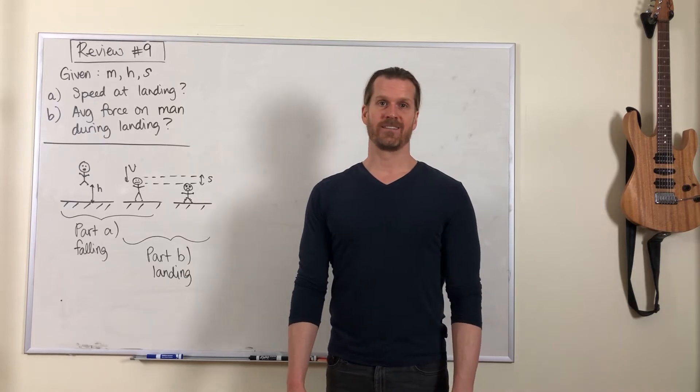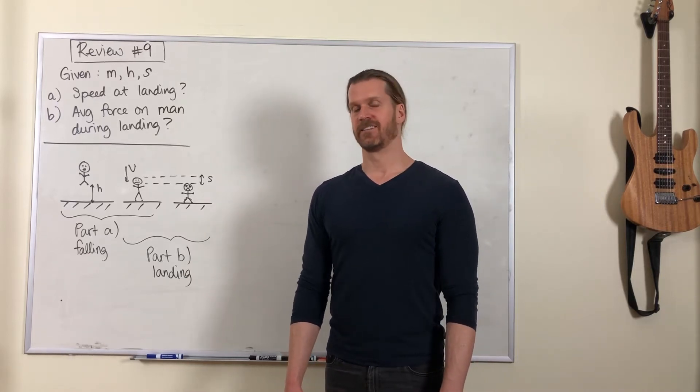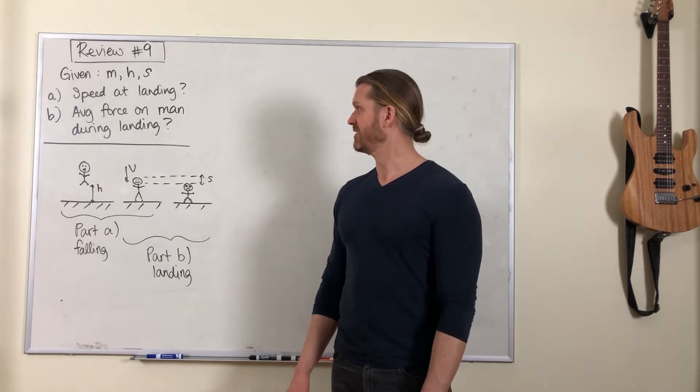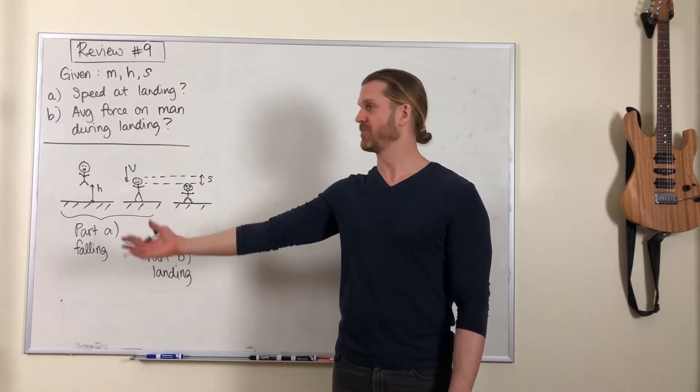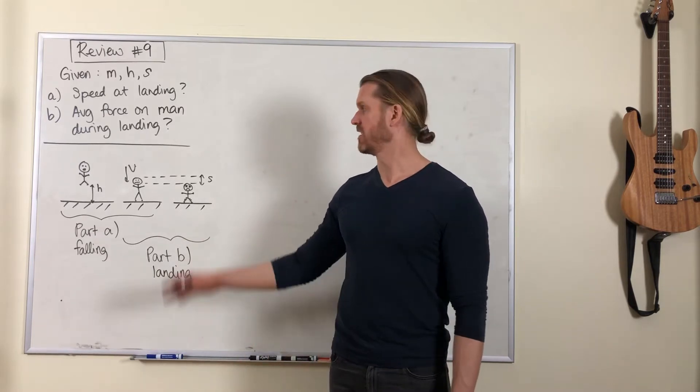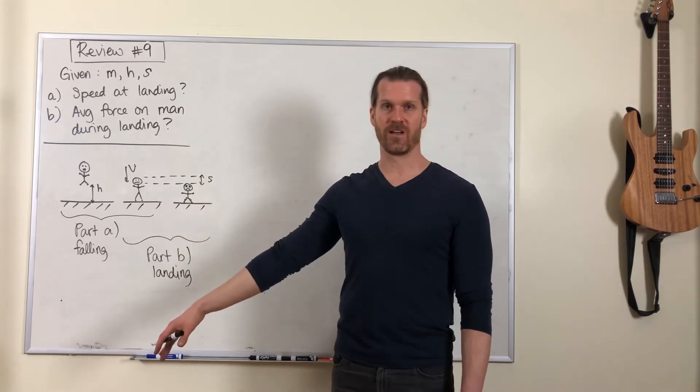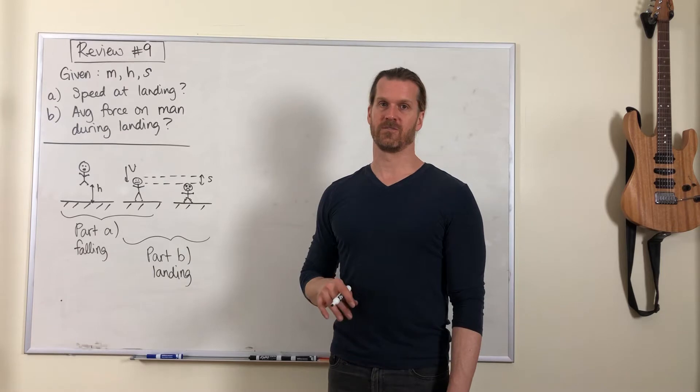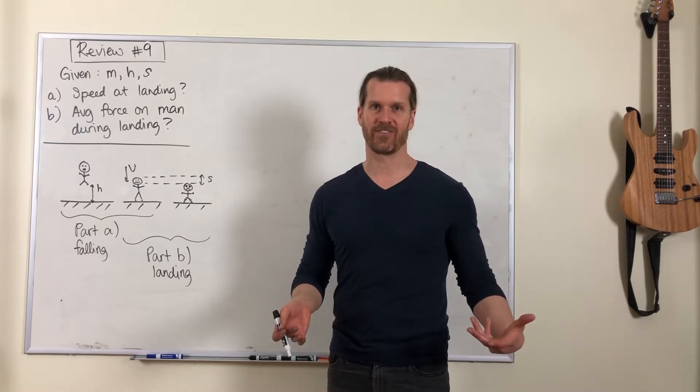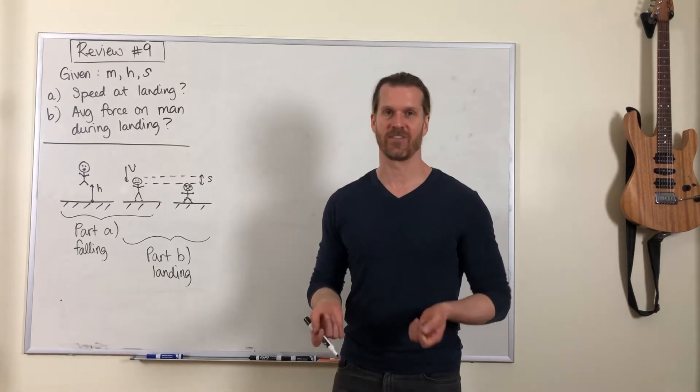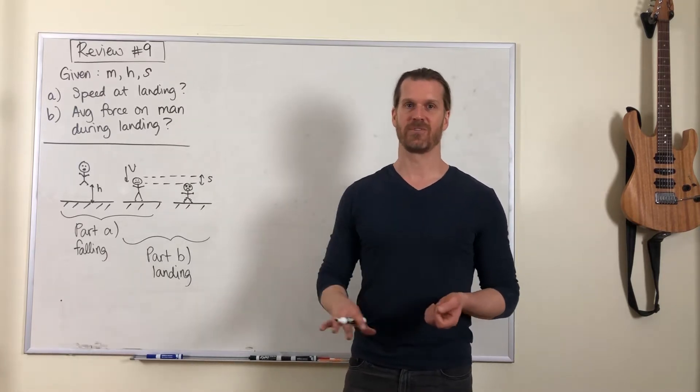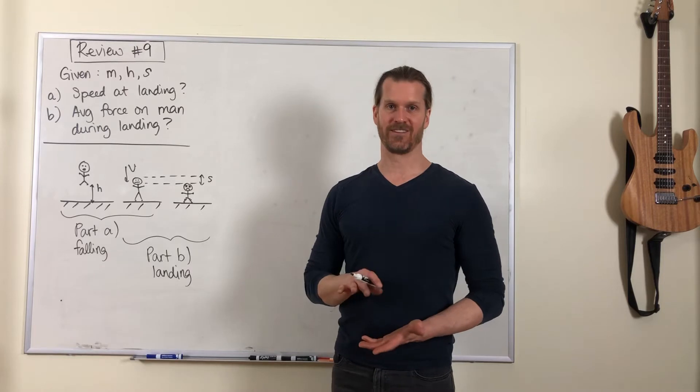Review problem number nine. We're going to look at a man who falls by some distance, jumps out of a window, and lands on the ground. In the process of landing, he does not flex his knees or bend his knees or flex his legs at all, just lands completely stiff-legged on the ground.